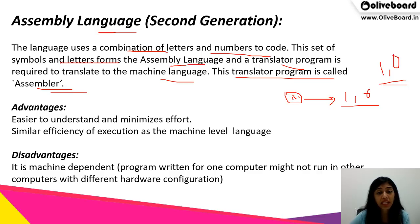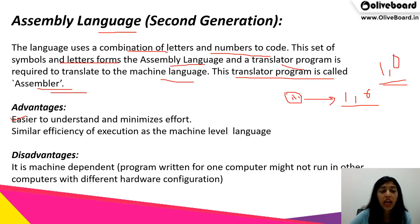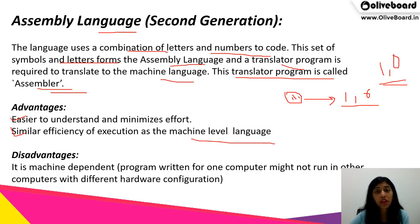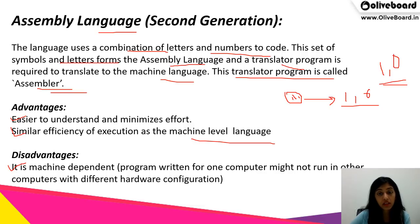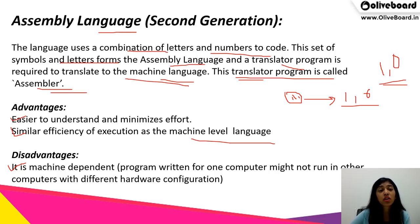The advantages of assembly language are that it is easier to understand and minimizes effort because we don't have to remember so many codes, and it has similar efficiency of execution as machine level languages because we have translators. The disadvantage is that it is machine dependent — we need a translator to convert assembly language into machine language.